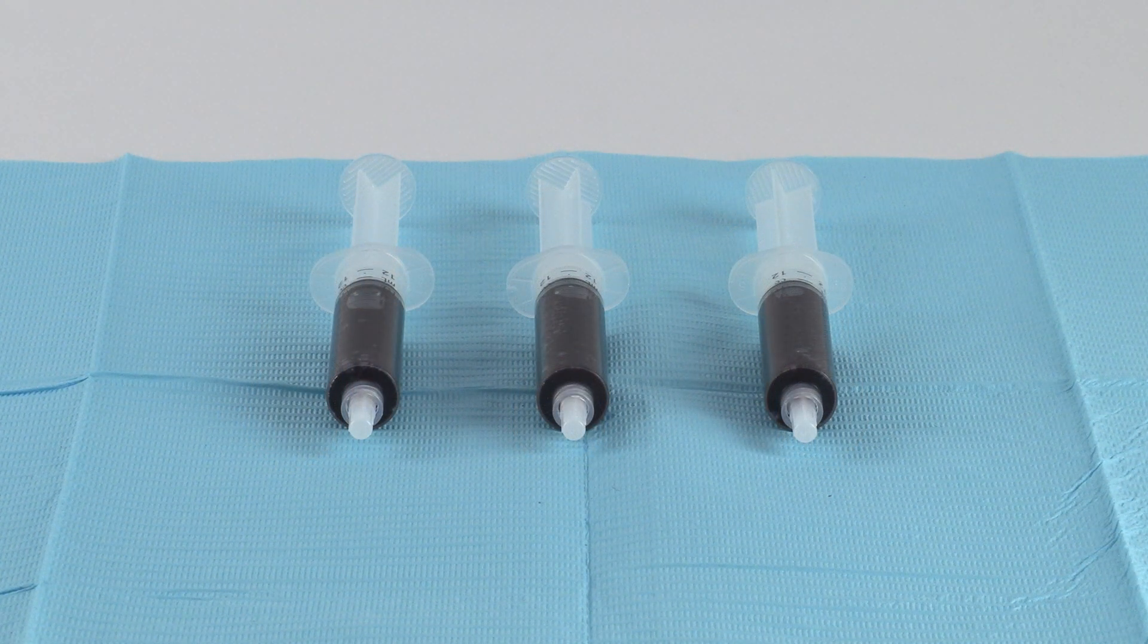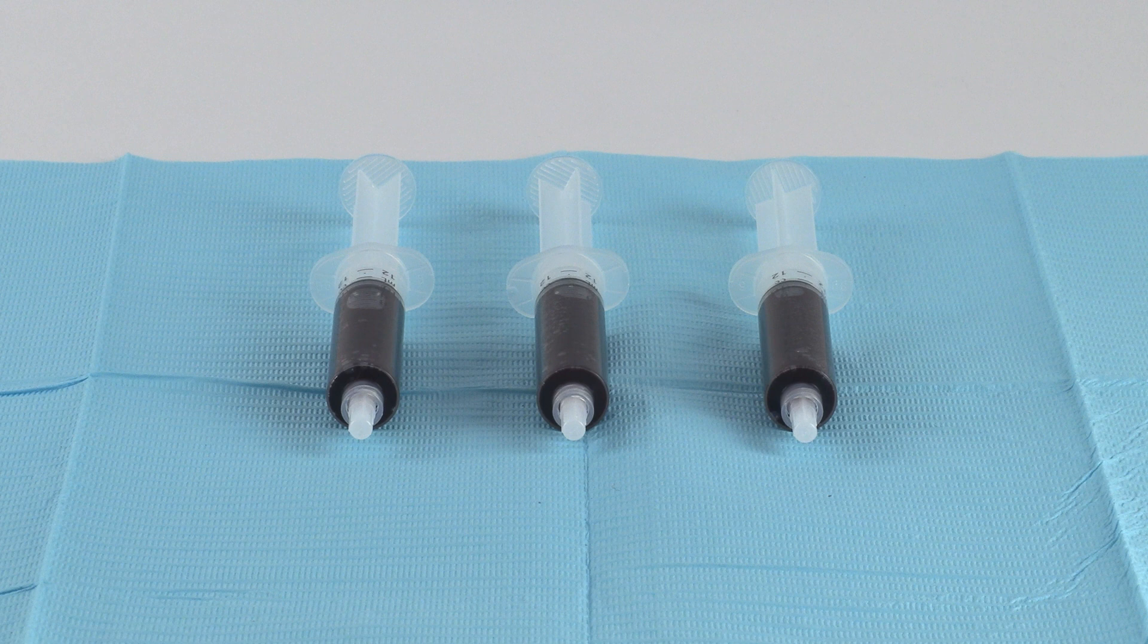Using standard technique, aspirate nine milliliters of bone marrow aspirate into each 12 milliliter heparinized syringe, filling three syringes to 10 milliliters.